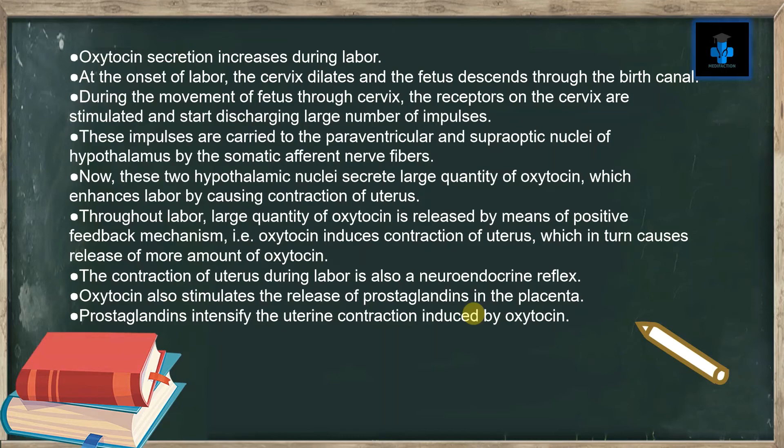Oxytocin also stimulates the release of prostaglandins in the placenta. Prostaglandins intensify the uterine contractions induced by oxytocin.